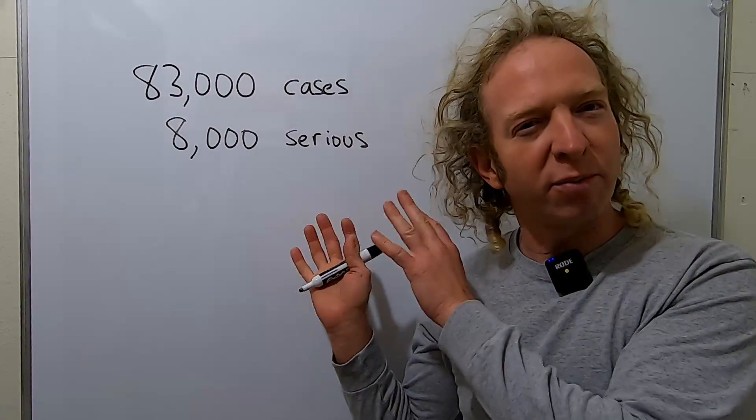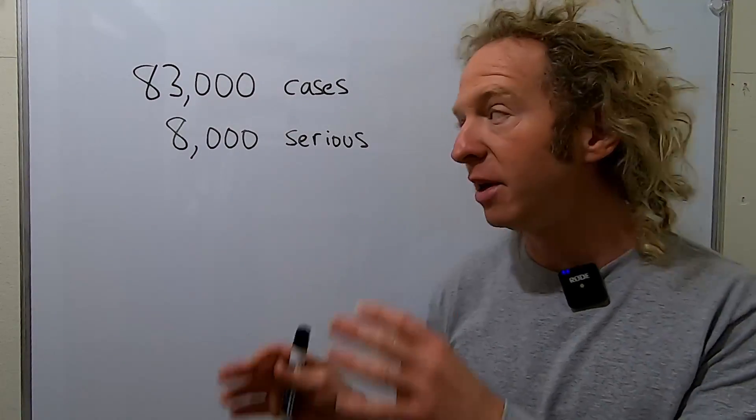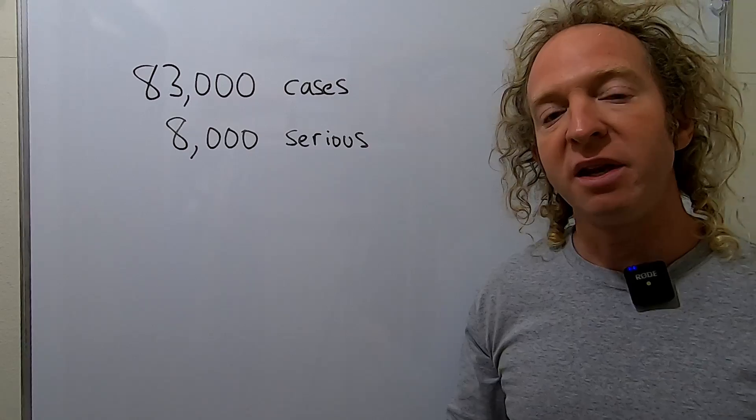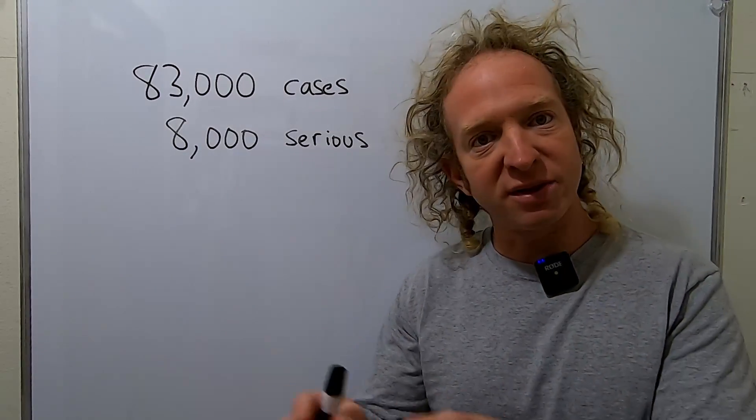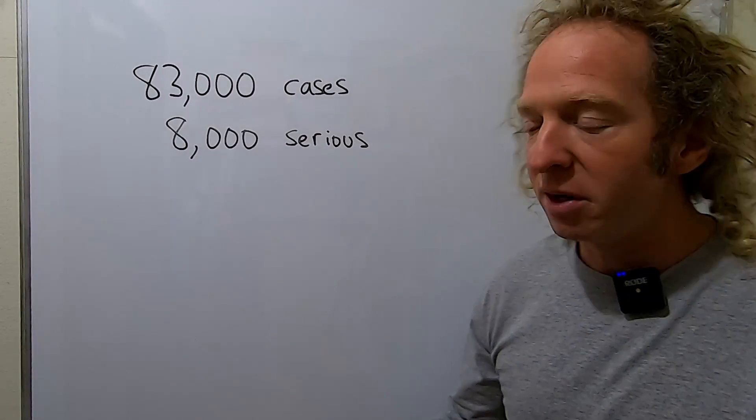Now, what do they mean by serious? I'm not sure, but it's probably pretty bad if you have a serious case of coronavirus. People are dying, so it's probably not a good thing. In this video I want to show you what the probability is that if you're infected with this disease you have a serious case. So this is what's called a conditional probability.